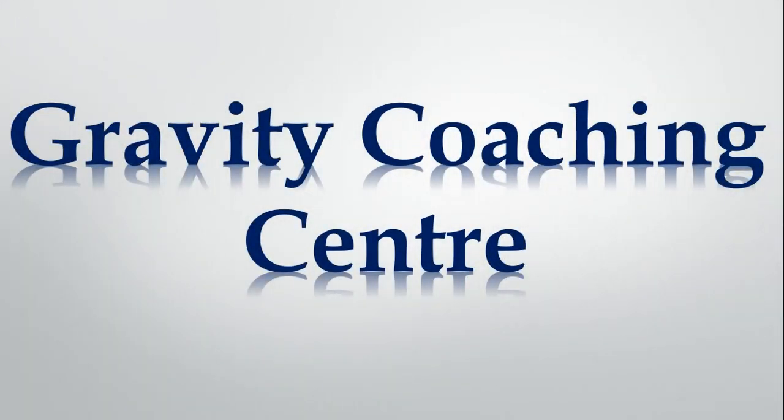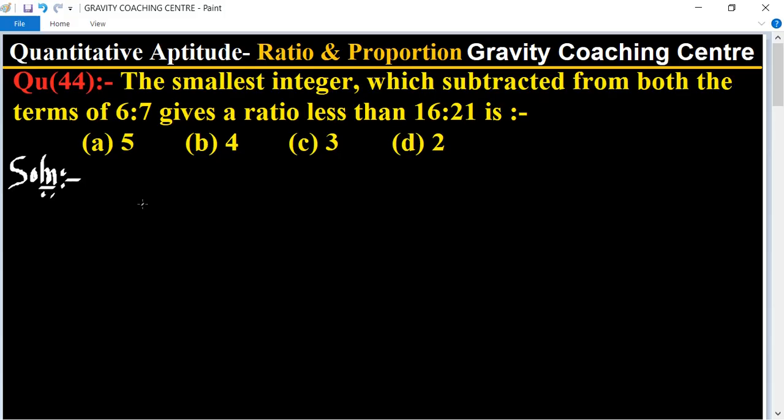Welcome to our channel Gravity Coaching Center. Quantitative aptitude chapter ratio and proportions, question number 44: The smallest integer which subtracted from both the terms of 6 ratio 7 gives a ratio less than 16 to 21 is.